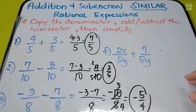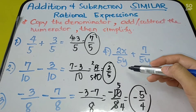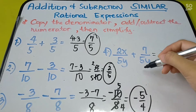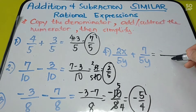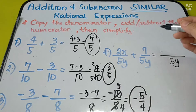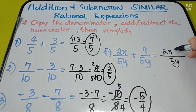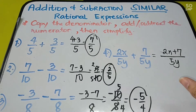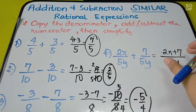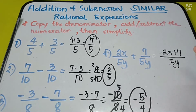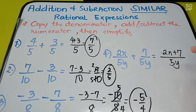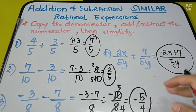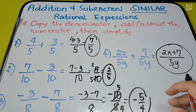Let us have number 4. We have 2x over 5y plus 7 over 5y. Same denominator again, which is 5y. Then add 2x plus 7. You cannot combine them further because one has a variable and the other doesn't. So there is nothing to cancel out. Therefore, the final answer is 2x plus 7 over 5y.